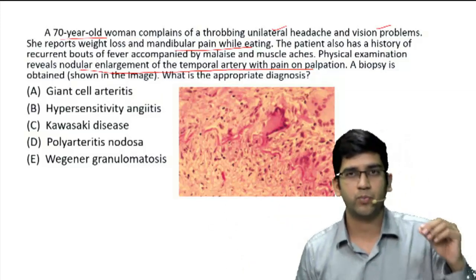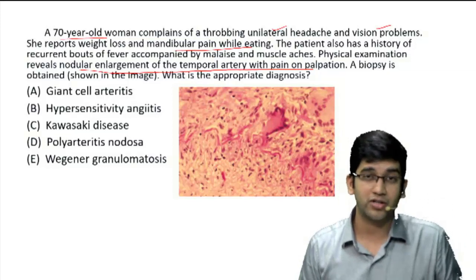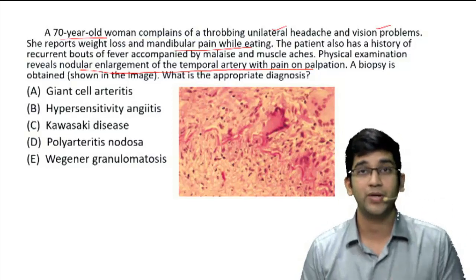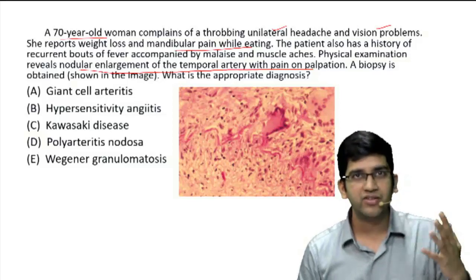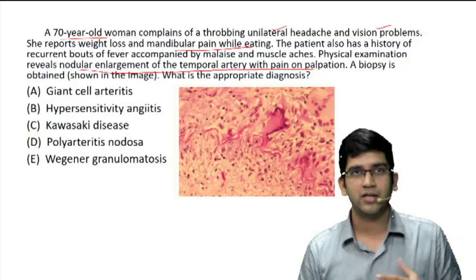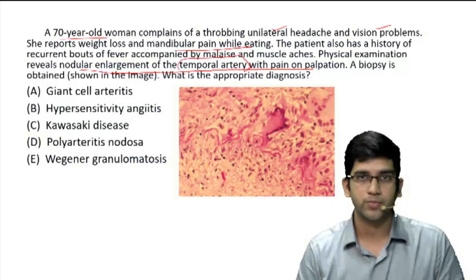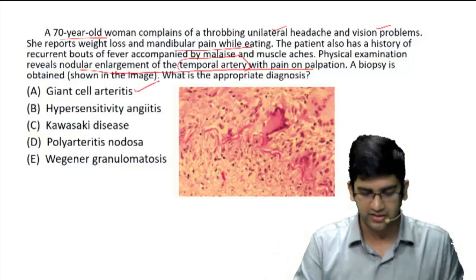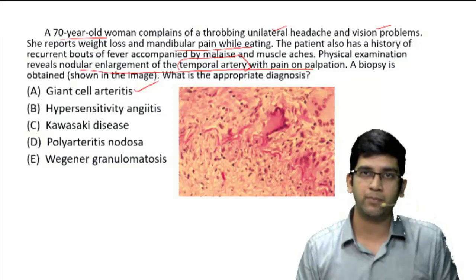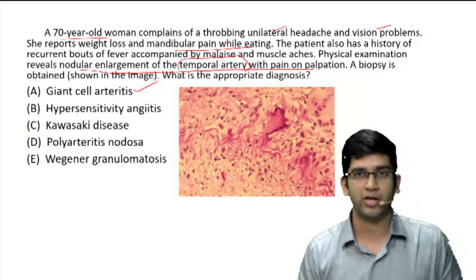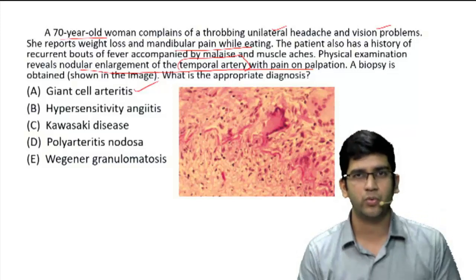Every word in this question points to a diagnosis. If you get the diagnosis wrong, it's going to be very difficult. You have to correlate. It's straightforward — everything points to one disease, and the final nail in the coffin is this: when you say it's a temporal artery biopsy, you are going to write giant cell arteritis. Don't even look at the picture, because the only disease you know in the temporal artery is giant cell arteritis, or temporal arteritis. Just go for the straightforward temporal arteritis.